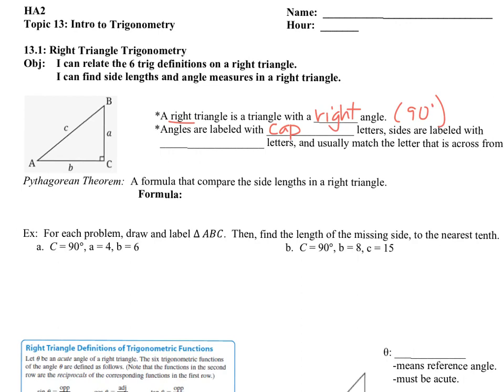Angles are labeled with a capital letter on the triangle. You can see that on the outsides for each vertex: A, B, and C. Sides are labeled with lowercase letters — lowercase a, lowercase b, and lowercase c — and the letter matches directly across the angle. For instance, angle A is directly across side a, angle B is directly across side b, and angle C, that right angle, is directly across side c.